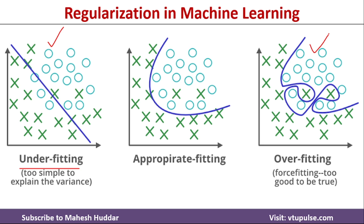The second model has learned too much and has very sharp edges or hyperplanes — that is an overfitting situation, as it is trying to memorize the training data rather than learning from it. In the third example, the model has learned appropriately; there are a few misclassifications, but it represents appropriate fitting for the given training data.